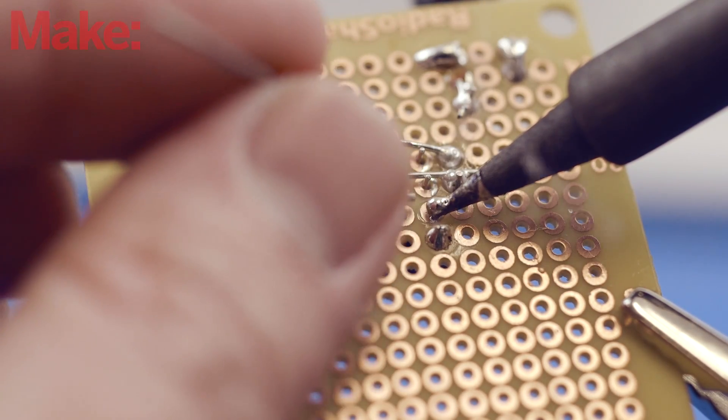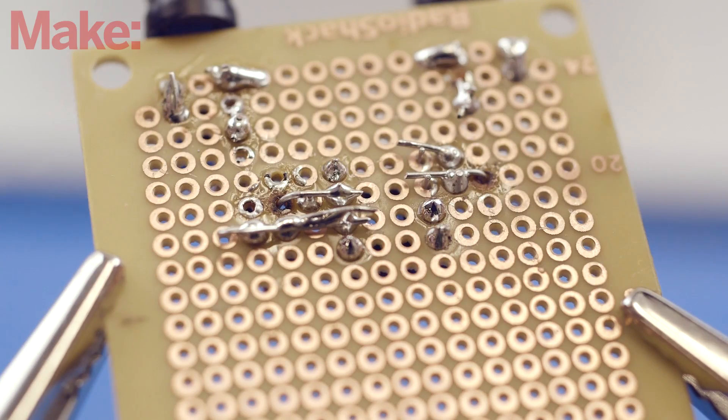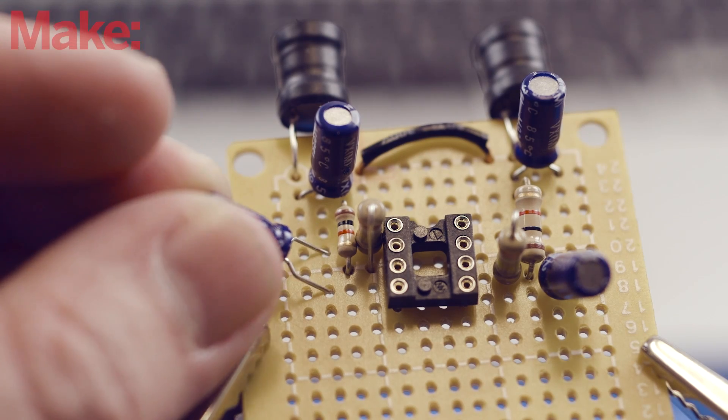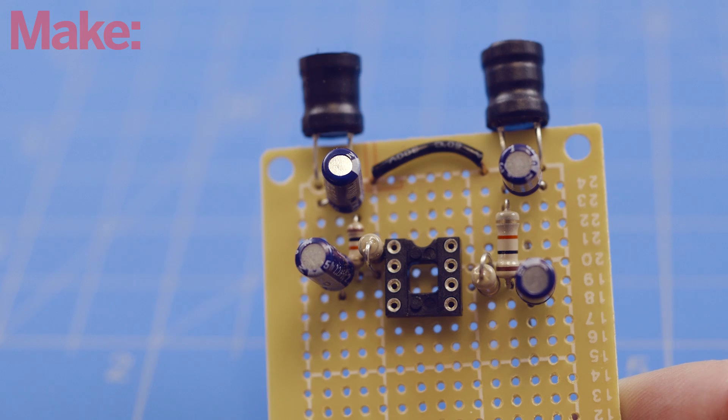Make solder bridges between the socket and the resistors like you see here. Add the second pair of 2.2 microfarad capacitors. These work with the first pair to define the bass sound.